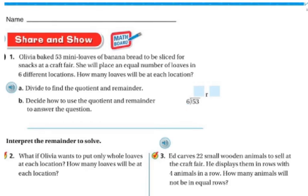We could try to jump up to 6 times 9, but that's 54. So that's going to be too big. So we're going to have to go 6 times 8. And 6 times 8 is 48. And when I subtract that, I'm going to regroup there. So I'm going to end up with 5. So I'm going to have 8 with a remainder of 5.